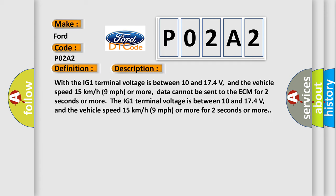With the IG1 terminal voltage between 10 and 17.4 volts, and the vehicle speed 15 km/h (9 mph) or more, data cannot be sent to the ECM for 2 seconds or more.